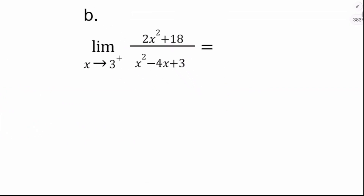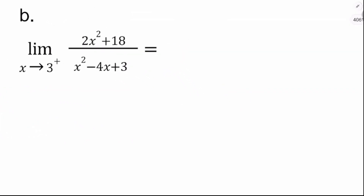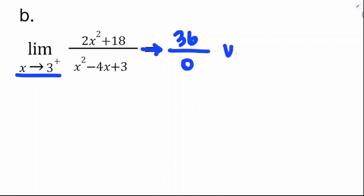The limit as x approaches 3 from the positive side is not end behavior, so I try plugging in x equals 3 first: 2 times 9 plus 18 is 36 on top; the denominator is 9 plus 3 minus 12 equals 0. So 36 over 0 — I'm on a vertical asymptote. I need to determine which infinity I'm approaching.